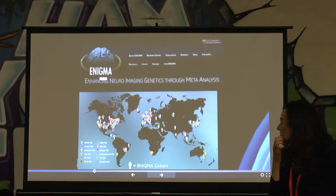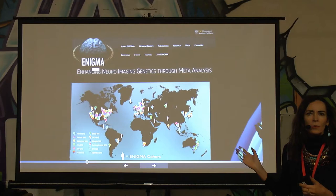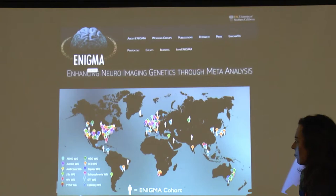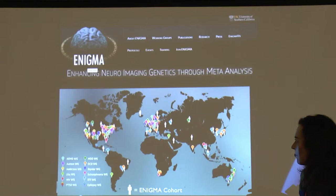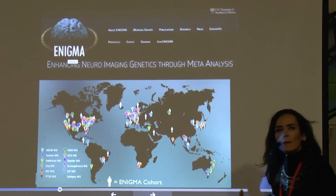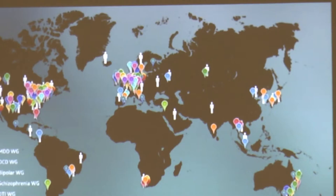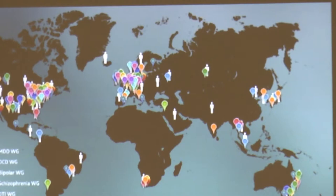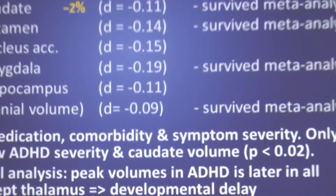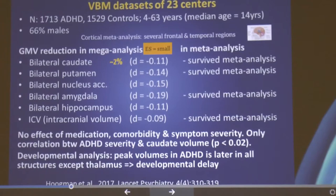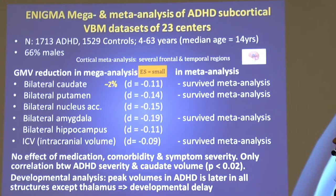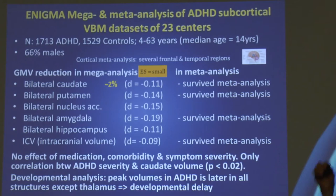This is a worldwide effort — the ENIGMA consortium — collecting imaging and genetic data across 23 centers from North America, Brazil, UK, Europe, Russia, and China. In the largest study we published last year, we again replicated the finding that the basal ganglia are smaller in ADHD patients, and frontal areas are also smaller. So frontal areas and basal ganglia areas are consistently smaller in ADHD patients.